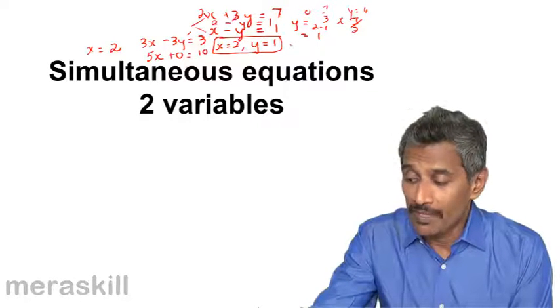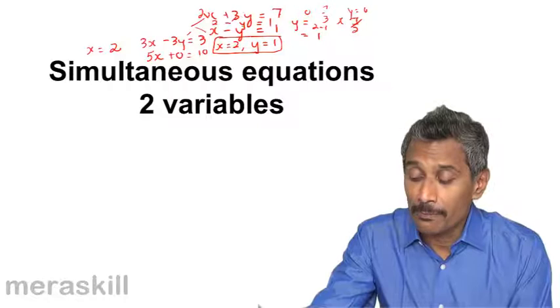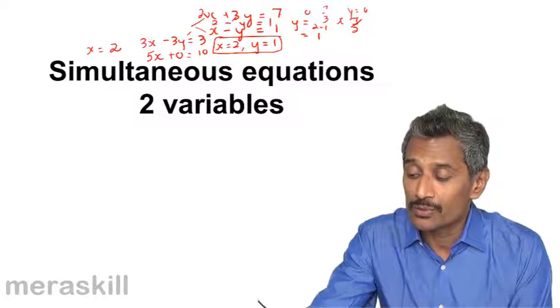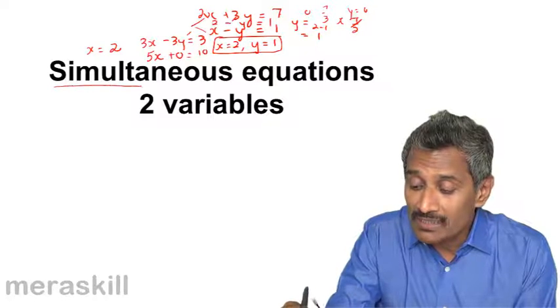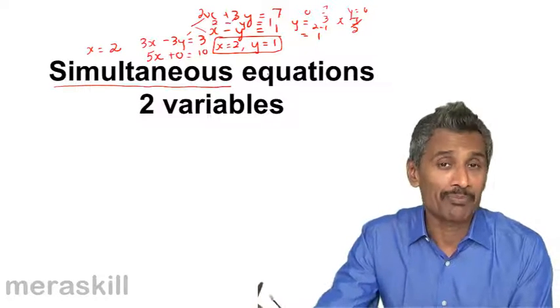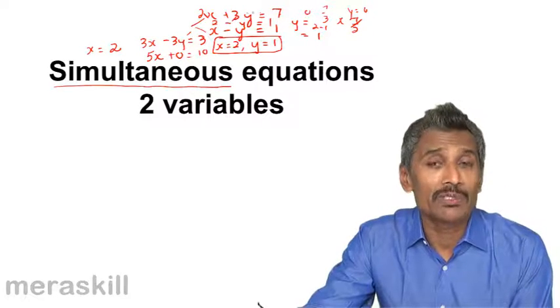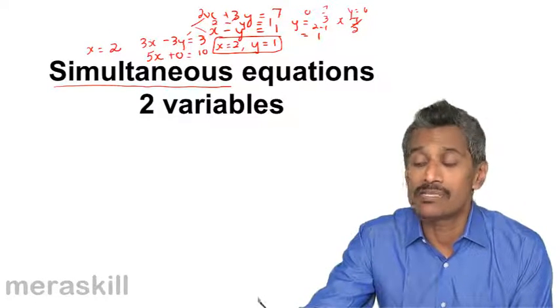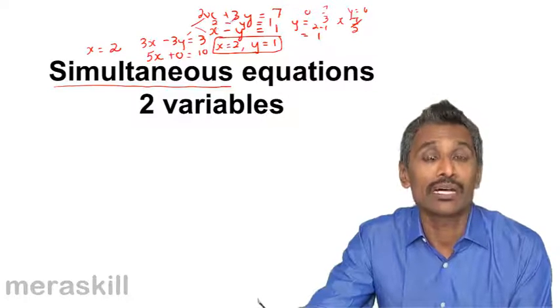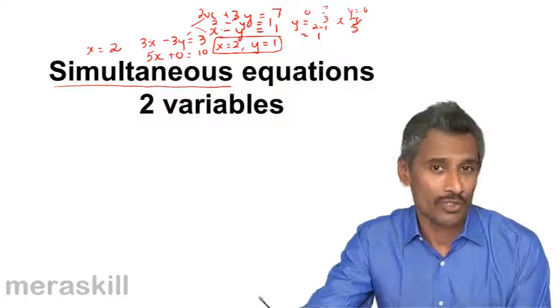So the pair of values which satisfy this particular pair of conditions is x is equal to 2, y is equal to 1. Hence the importance: simultaneously, at the same time, an equation in two variables can never be solved in isolation. It has to be simultaneously solved with another equation to arrive at a unique solution.